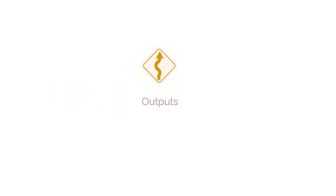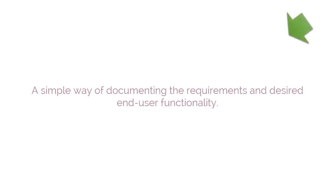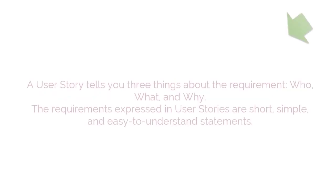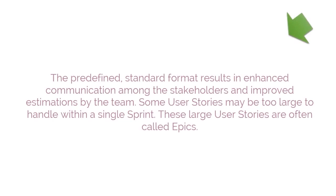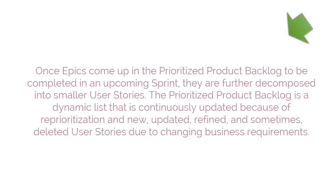The mandatory outputs of this process are User Stories and User Story Acceptance Criteria. User Stories are a simple way of documenting requirements and desired end user functionality — telling you who, what, and why. The requirements are short, simple, and easy to understand. Large user stories are called epics, and once they come up in the backlog, they are decomposed into smaller user stories. The Prioritized Product Backlog is a dynamic list continuously updated due to reprioritization and changing business requirements.